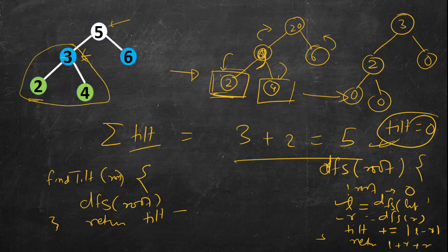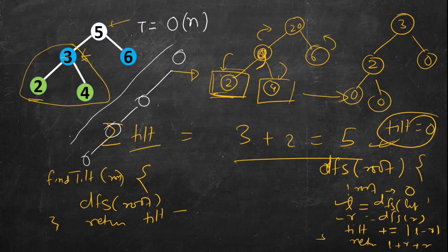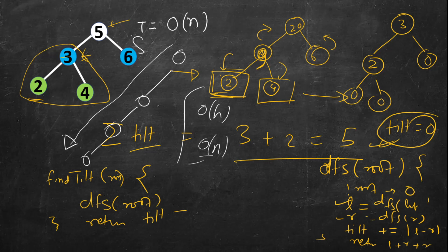The time complexity is O(n) since we do just one traversal of the tree. For space complexity, we are not using any extra variables other than local ones, but the recursion stack can hold all nodes if the tree is very skewed, giving O(n) worst case. For a perfectly balanced tree it would be O(h). So time is O(n) and space is O(n) worst case.